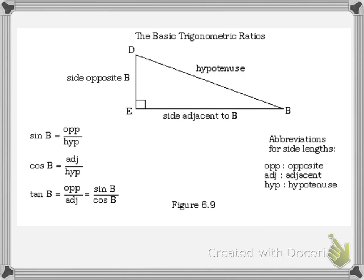Here we have the basic trigonometric ratios. We have our hypotenuse, our adjacent side to B, and our opposite side of B. Now to find the sine of B, we are going to take the opposite over the hypotenuse. For the cosine of B, it's going to be the adjacent over the hypotenuse. And then tangent would be the opposite over the adjacent, which is also known as sine over cosine.